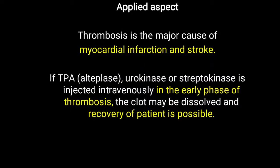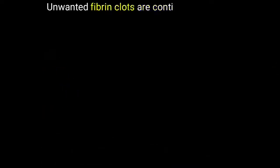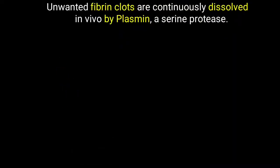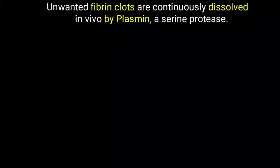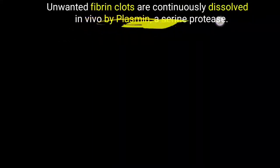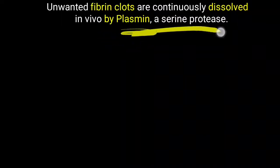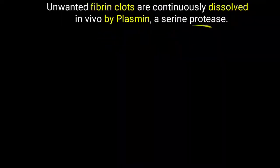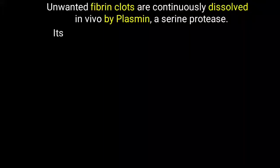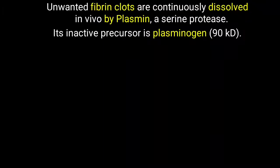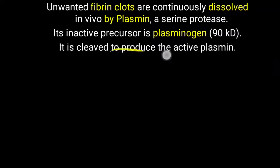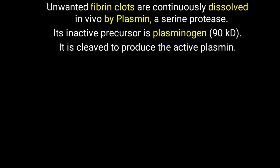Whenever injury occurs, a clot is produced, but these unwanted fibrin clots are continuously dissolved in our body with the help of plasmin, which is a type of serine protease. The active site of plasmin contains the serine amino acid. Its inactive precursor is plasminogen, from which active plasmin is generated to dissolve unwanted fibrin clots.